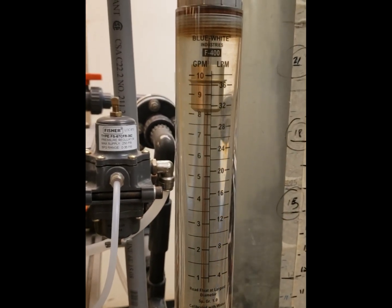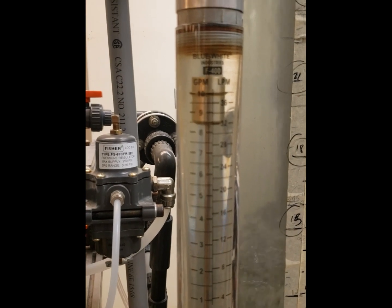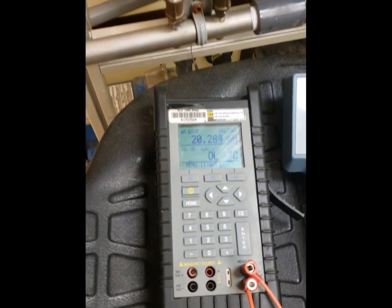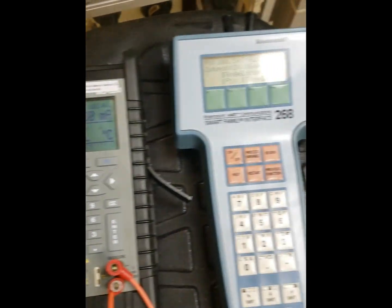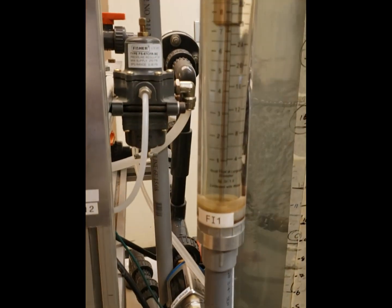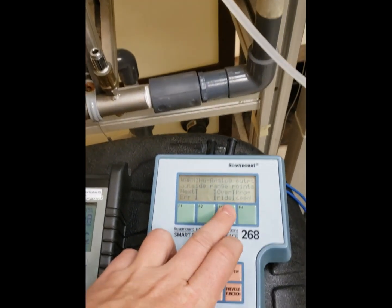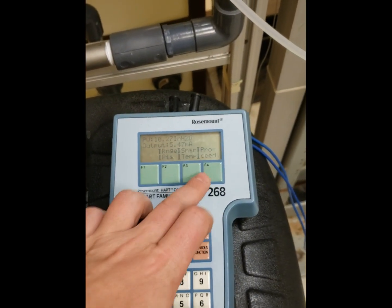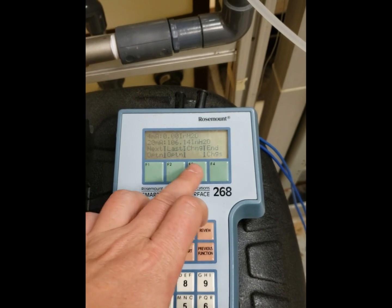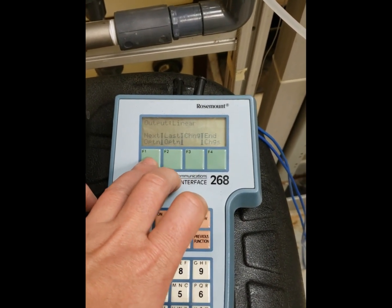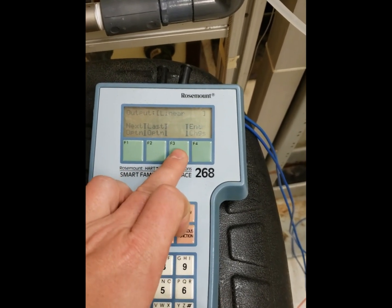And now we go up to a hundred percent, and a hundred percent flow gives us a hundred percent output. Now this is in the linear function. That is why we need to have a square root extractor. So now let's quickly save that from going out of range. Let's quickly go to our HART communicator and let us change our output from linear to square root.